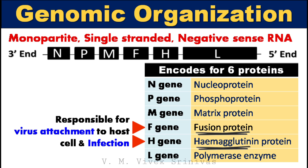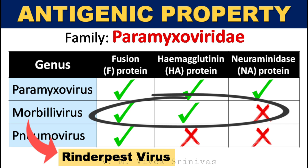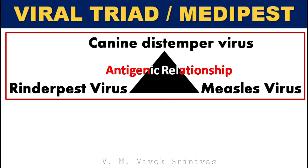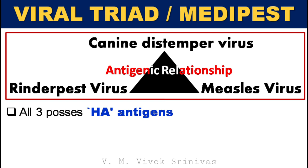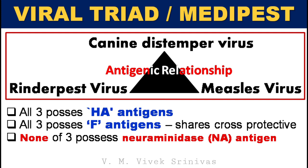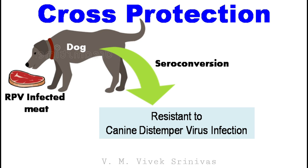Antigenic property: Among viruses in the family Paramyxoviridae, the genus Morbillivirus possesses fusion protein and hemagglutinin but lacks neuraminidase. The three viruses under the genus Morbillivirus — canine distemper virus, rinderpest virus, and measles virus — share a common antigenic property: all three possess hemagglutinin and fusion antigens with cross-protectivity, and none possesses neuraminidase protein. This shared antigenic property is termed the 'viral triad' or 'medi-pest.' Thus, if dogs consume rinderpest virus-infected meat, they can seroconvert and become resistant to canine distemper virus infection — this is called cross-protection.